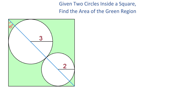Now, let's take a look at the distance between the centers of these two circles. Because the radius of the larger circle is 3 units and the radius of the smaller circle is 2 units, the distance between the centers is 5 units.